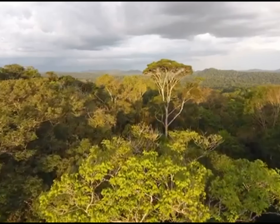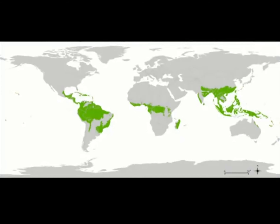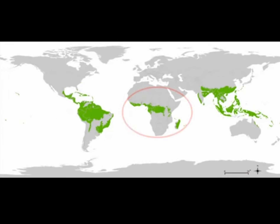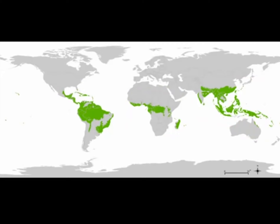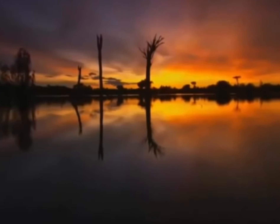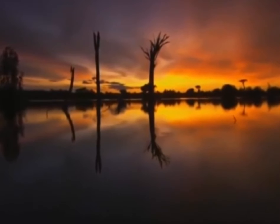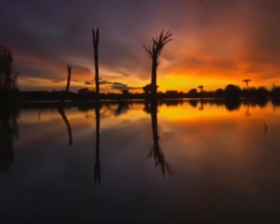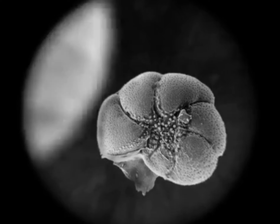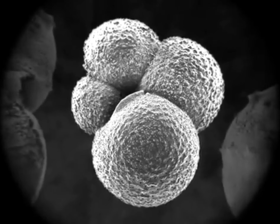The rainforest receded to lower latitudes and were replaced by grasslands. The remaining rainforests became fragmented and isolated, leading to endemism and many species that had grown adapted to the lush rainforest ecosystems gave rise to reptilian tetrapods.